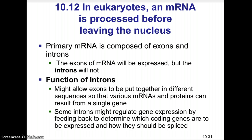Also, there are some introns that might regulate gene expression by feeding back to determine which coding genes are to be expressed and how they should be spliced. So before the messenger RNA transcript leaves the nucleus, it gets spliced and capped. You remove all those introns, keep the exons, and then it's capped, and then it will leave the nucleus through a nuclear pore.